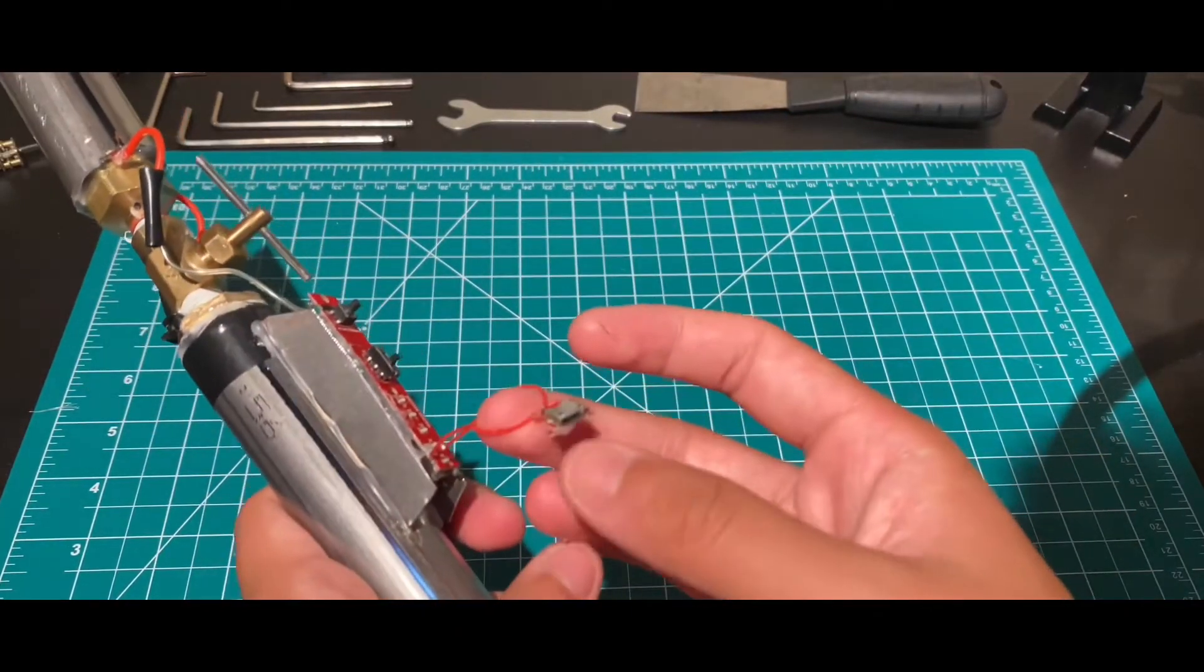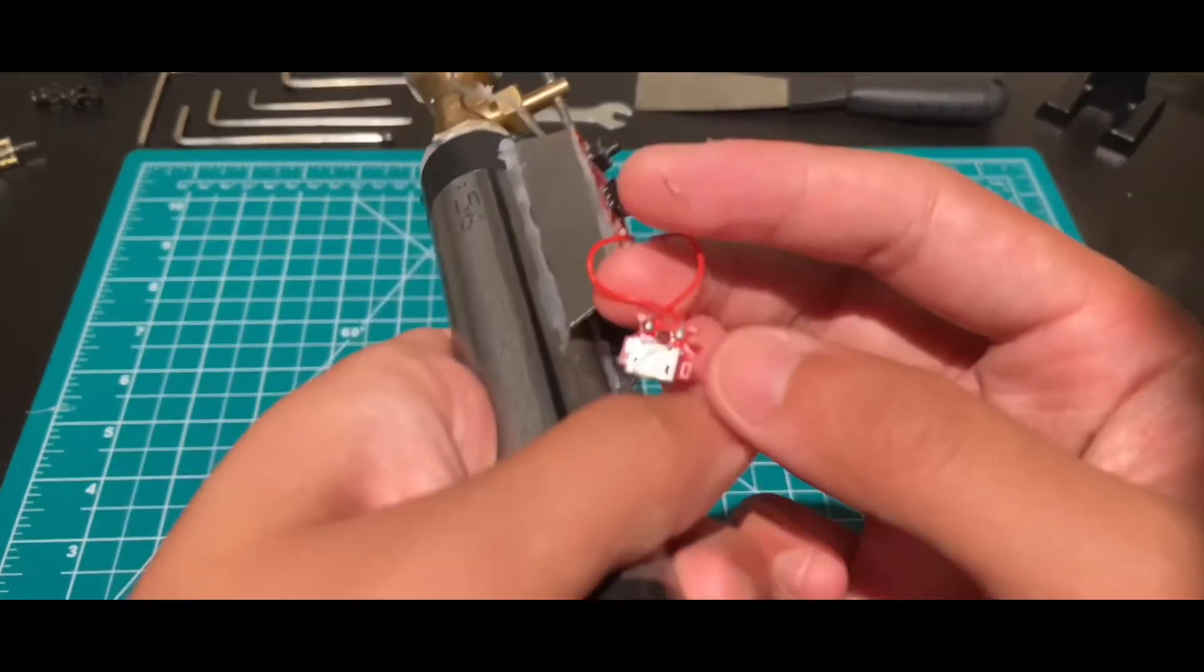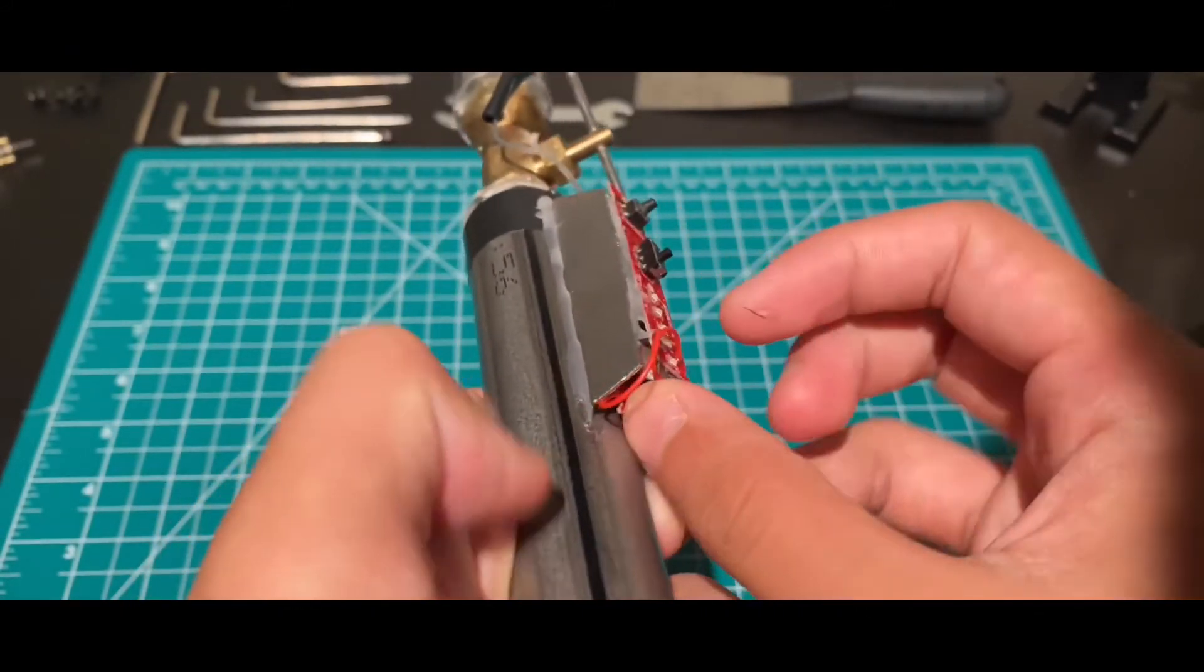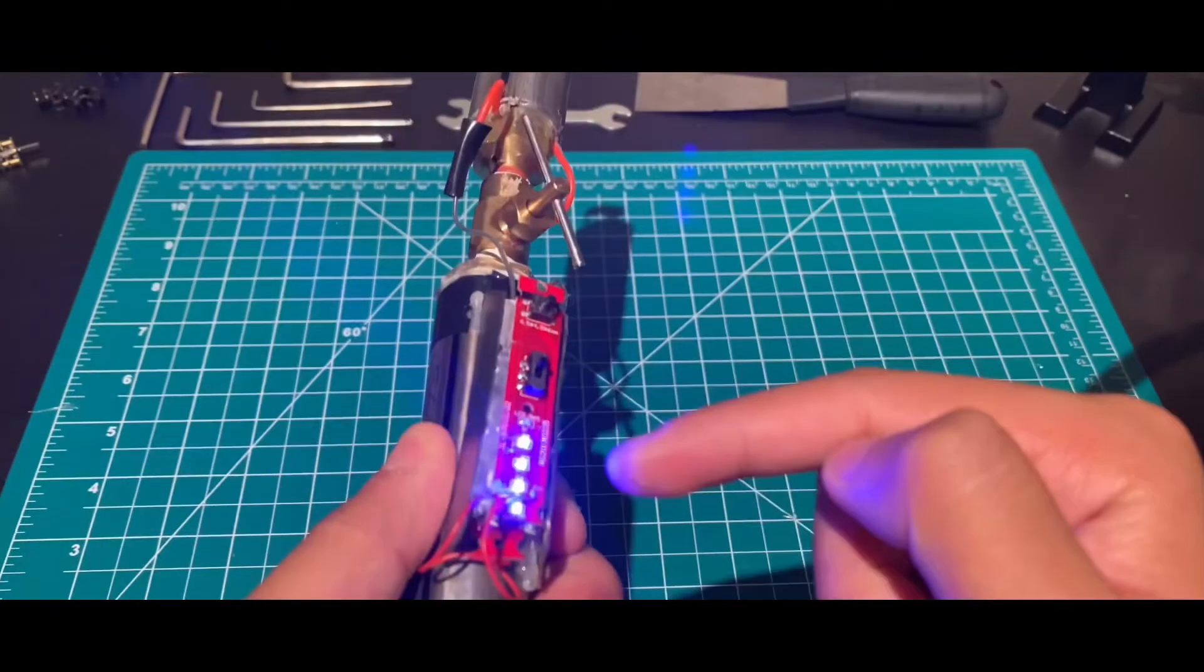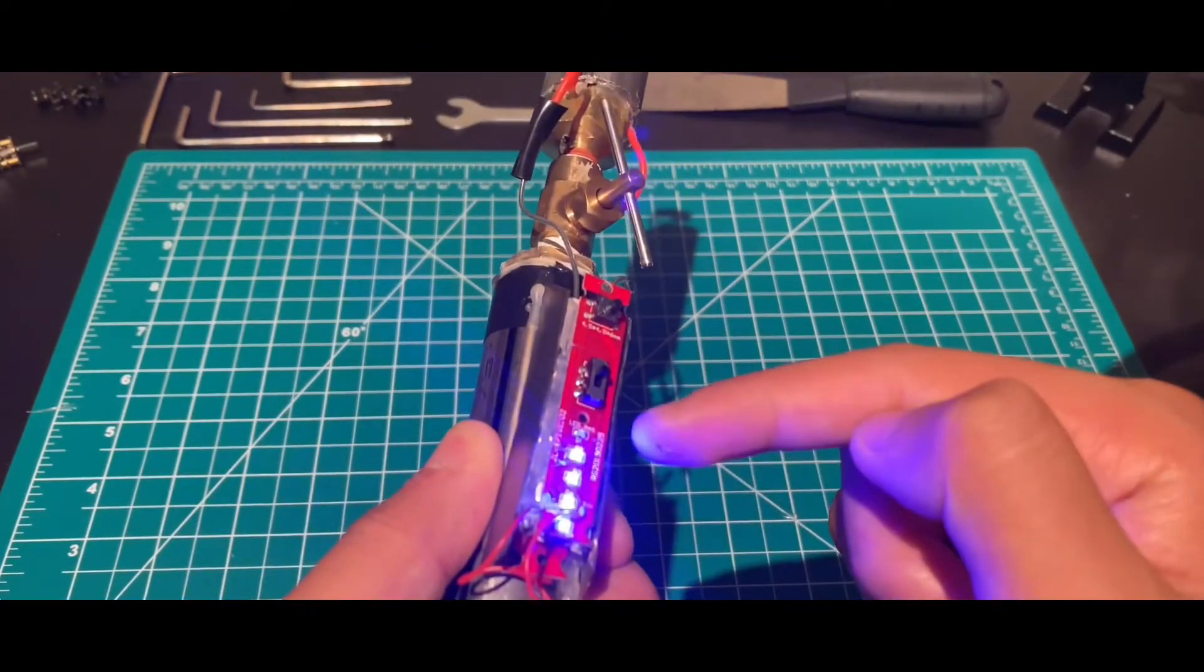When you open the valve again you want to turn it on and you want to press the button and that will ignite your fuel. So instead of just being some transparent liquid it becomes a fiery transparent liquid.